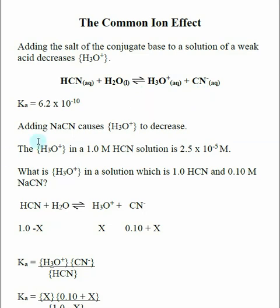As we add the conjugate base, remember you can't just add CN-, there needs to be some cation involved, typically sodium or potassium. In this case, as we're adding sodium cyanide, we're adding CN-, that's going to cause the equilibrium to go to the left, and that's going to cause our concentration of hydronium to decrease.